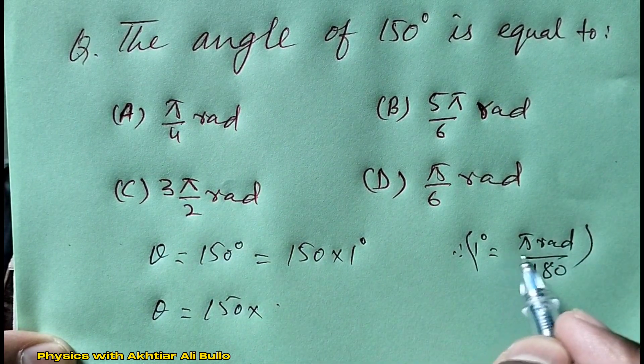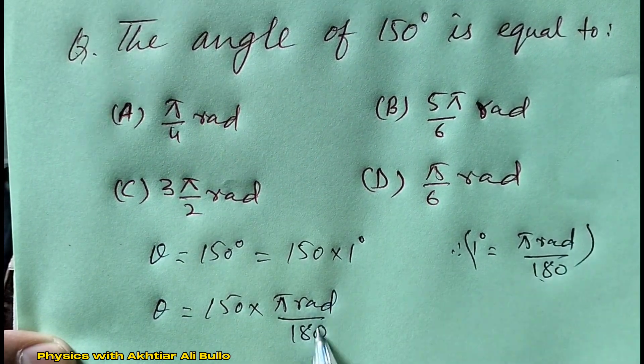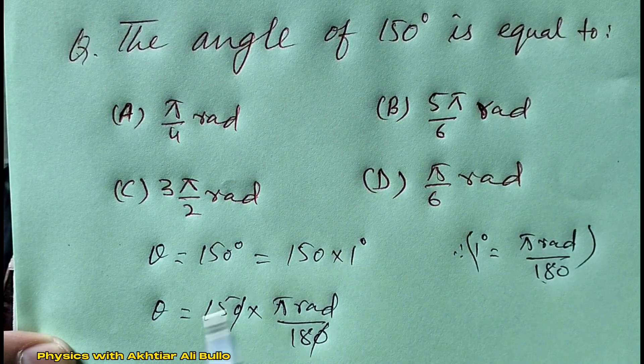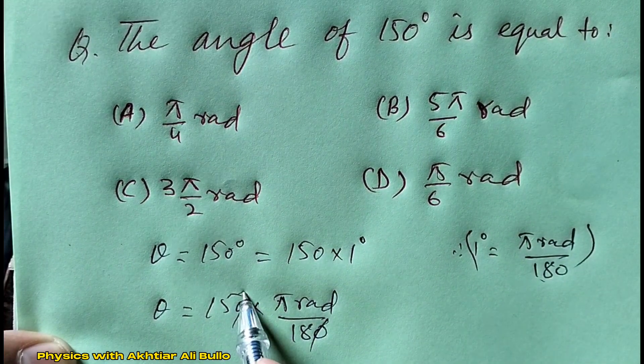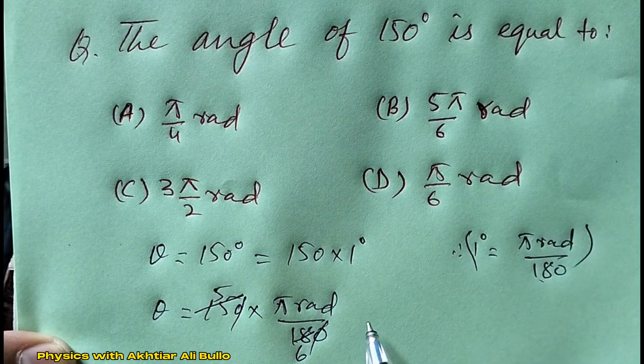The zeros cancel out. Using the table of 3: 15 divided by 3 is 5, and 18 divided by 3 is 6. Therefore, the angle is obtained as 5π/6 radian.